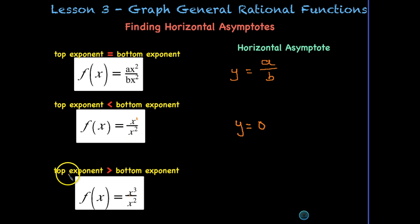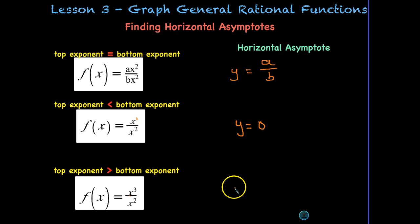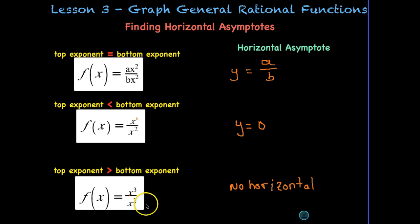What if it's top-heavy, meaning the top exponent is greater than the bottom? Like x cubed divided by x squared. Well, we have what's called an oblique asymptote, which is sort of like a linear function, but for this class we won't be exploring that. So for now we will say no horizontal asymptote — only a vertical asymptote.